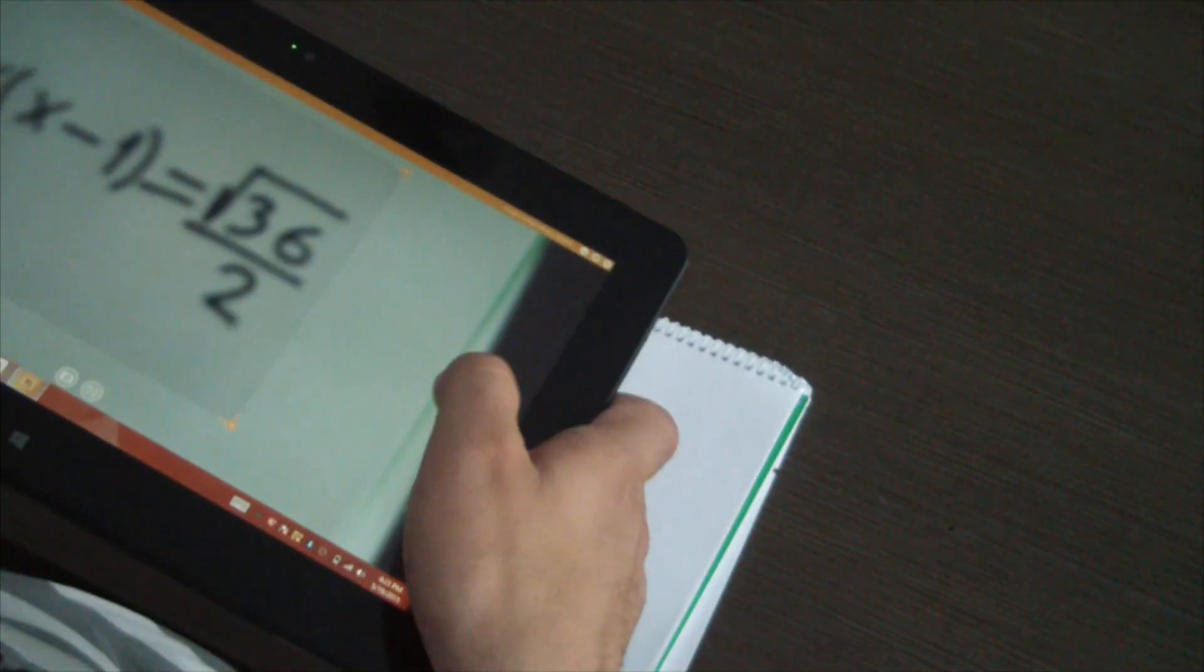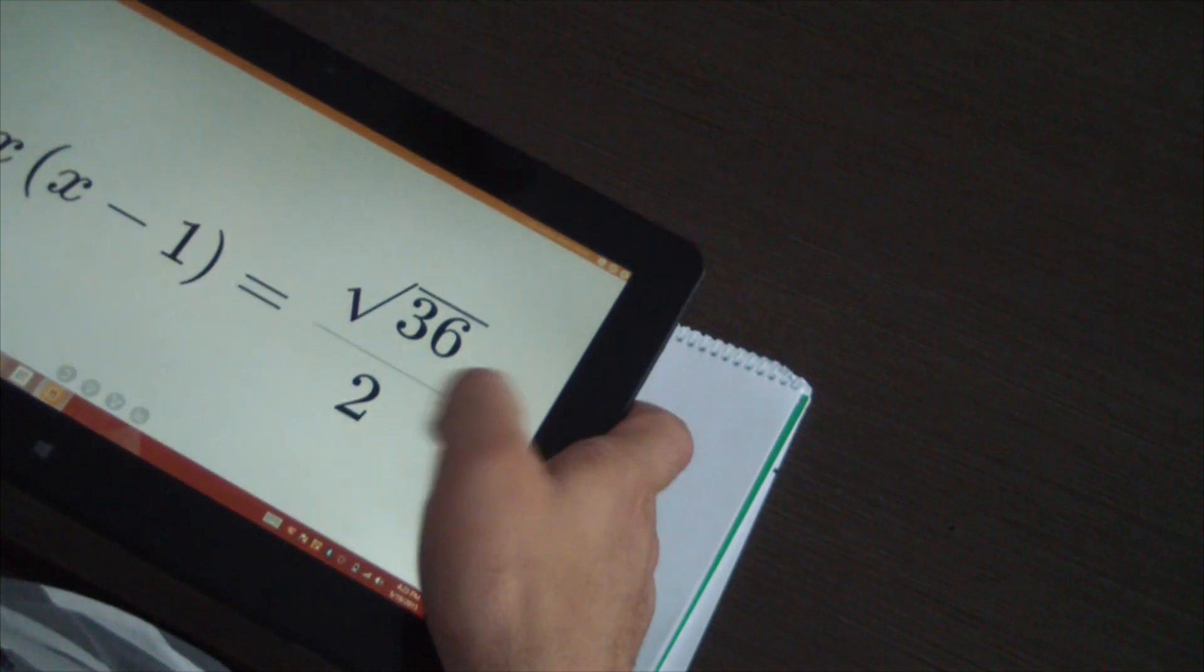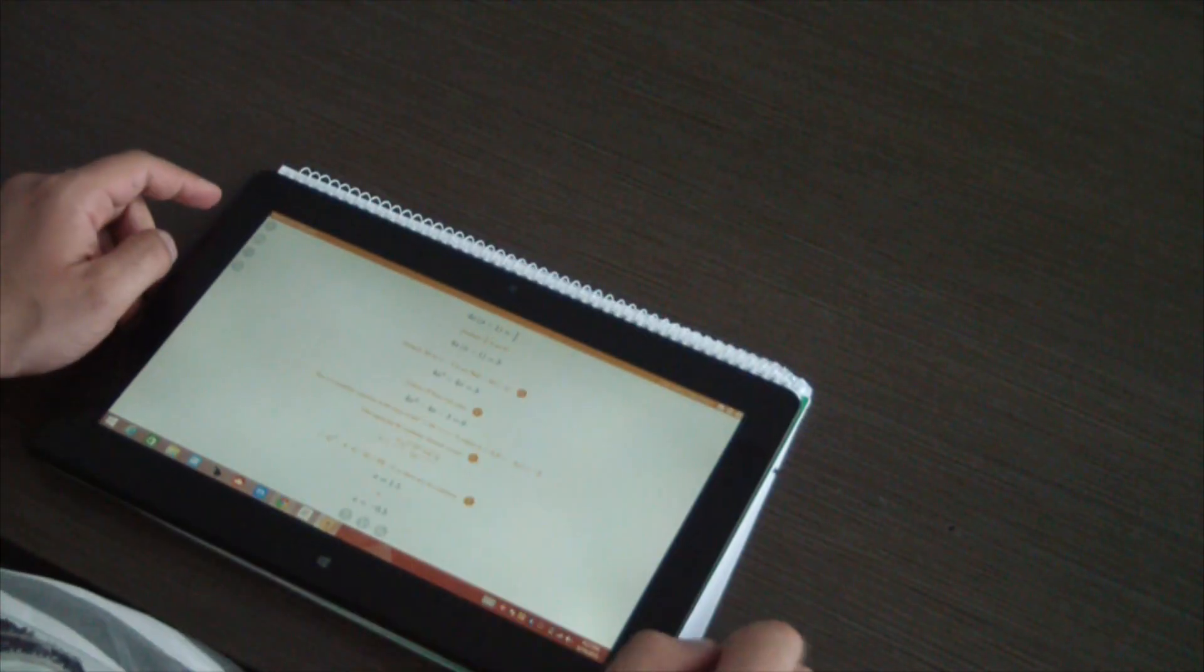Write down your equation on a piece of paper, use your device's camera, and simply take a picture of it.